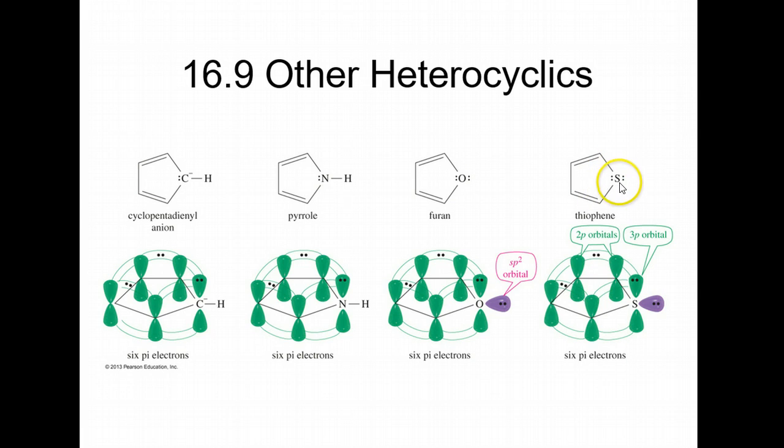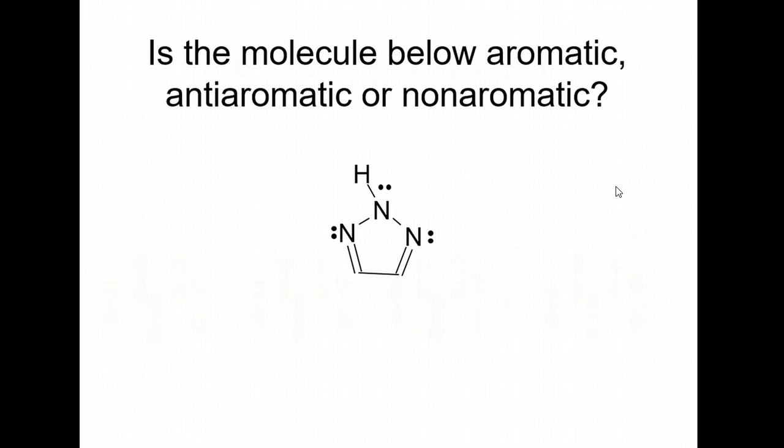Same thing for thiophene, which is the sulfur equivalent. Let's do a test. Is the molecule below aromatic, antiaromatic, or nonaromatic? Let's go through the criteria. First criteria: cyclical? Yes. Second criteria: do you have a conjugated system? Yes.